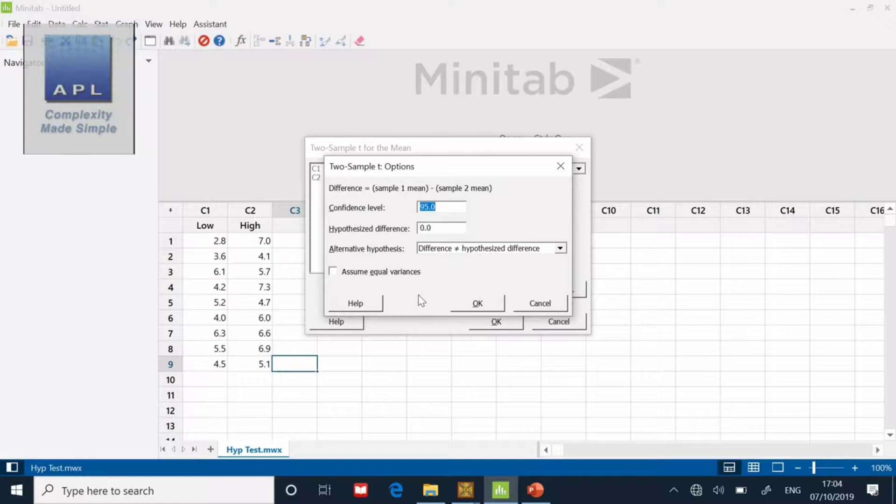It says that I can assume equal variances. Well, I'm not going to do that. I'm going to assume that the variances are different and it will put that into the calculation. It then says, what's the alternative hypothesis? So you can go greater than, you can go less than, or you can go just not equal to.